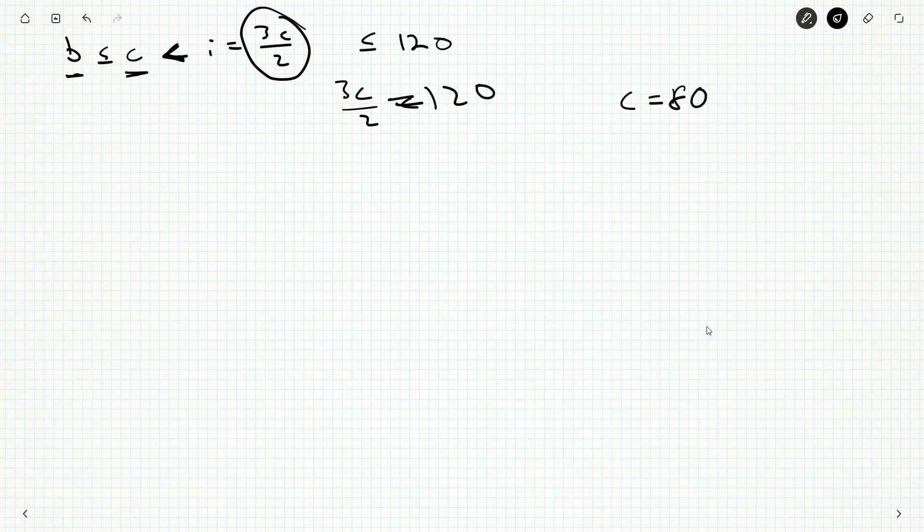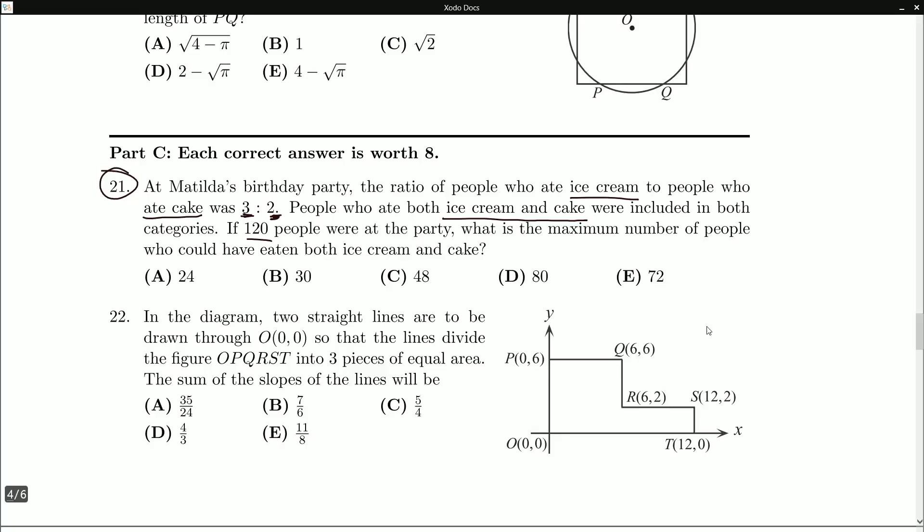That's the biggest it could ever be, and the biggest B could ever be is C, and that would make the biggest B possible. And so, what would we have? Ice cream's 120, cake is 80, and we've got B is 80 people having both. That works out fine. I don't see any reason for that not to be the case. And 80 is the biggest possibility, so we are looking at an answer of D.